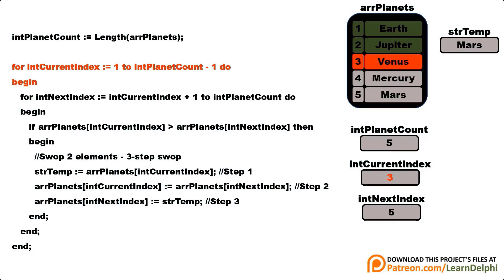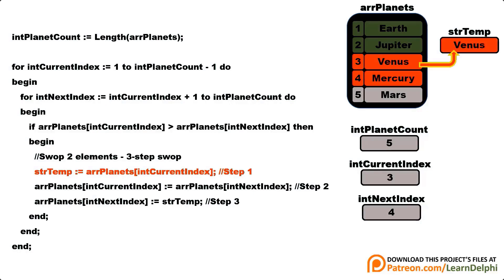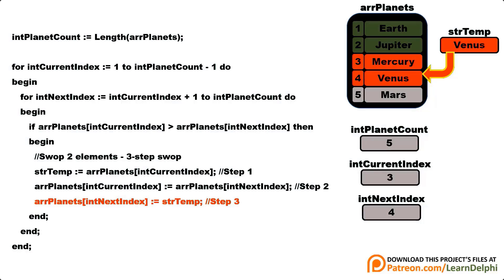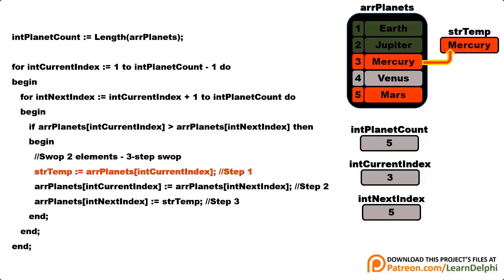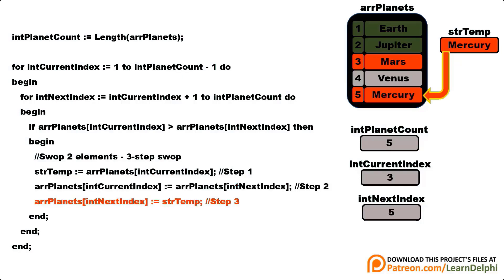The compiler jumps back to the outer loop and increments the current index to 3, finding Venus. The inner loop starts at the next index and finds Mercury. Venus is greater than Mercury, so we swap: store Venus in temp, overwrite Venus with Mercury at index 3, then bring Venus back where Mercury was. The inner loop continues to Mars — Mercury must go after Mars, so we swap again: store Mercury in temp, overwrite Mercury with Mars at index 3, then bring Mercury back where Mars was. The inner loop has reached the end of the array, and Mars is now in its final position.